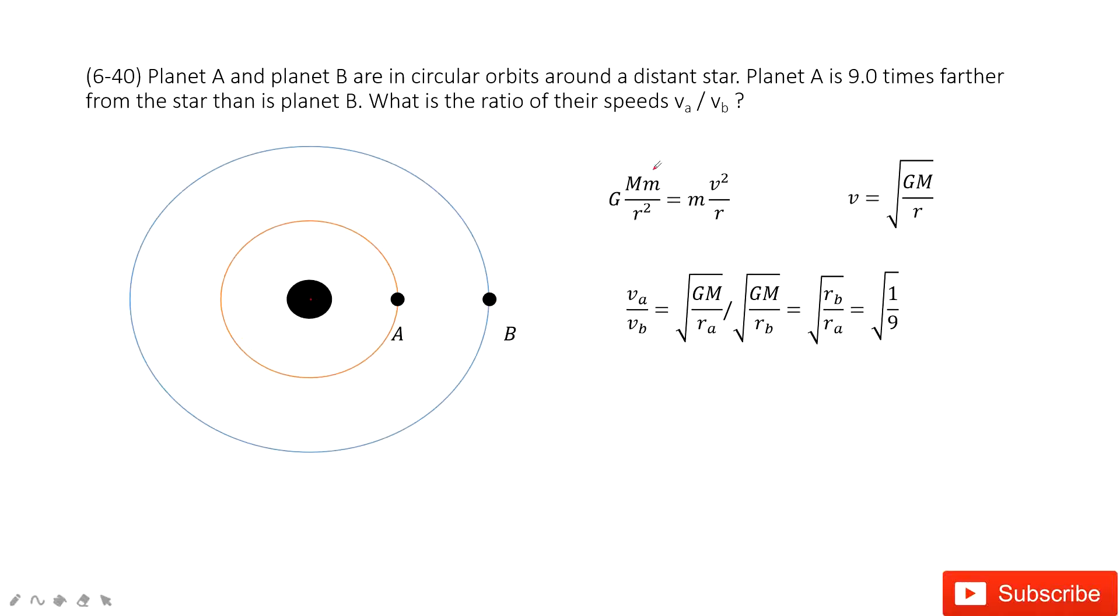The central force is gravitational force equals mass times the centripetal acceleration v squared divided by r. In this one, we can find the velocity. The speed for the circular motion is just the square root of GM divided by r. We can see GM is a constant. The r is the variable.